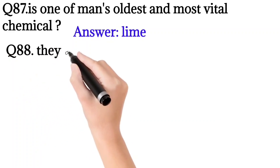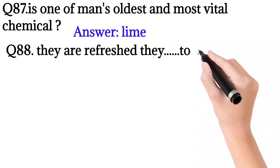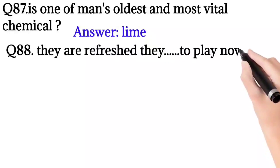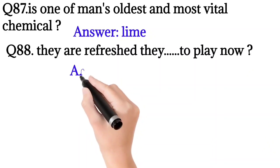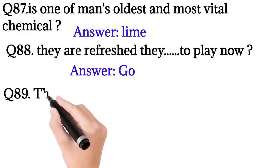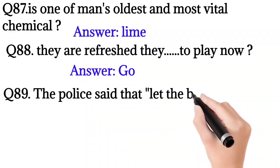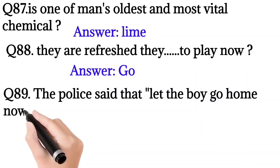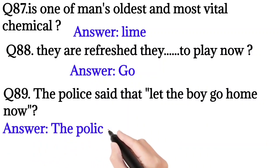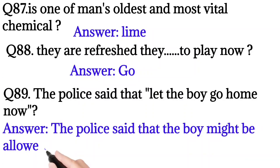Question number 88: They are refreshed. They... to play now? Answer: go. Question number 89: The police said that let the boy go home now. Convert to indirect. Answer: The police said that the boy might be allowed to go home.